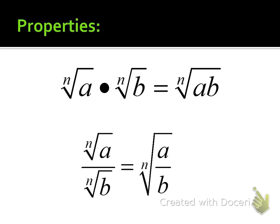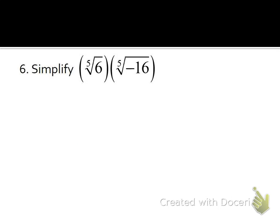Now some properties: the multiplication property and division property we used for square roots still hold as long as the indices are the same. As long as both radicals have the same index, we can multiply the insides together or divide them to make a fraction. We have to be working with the same roots.